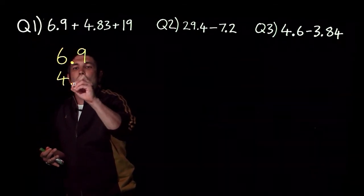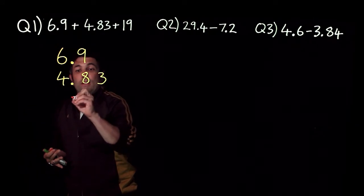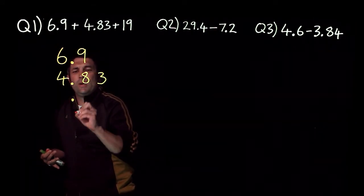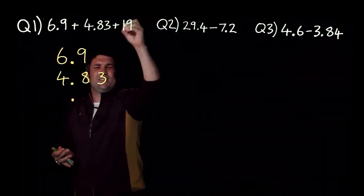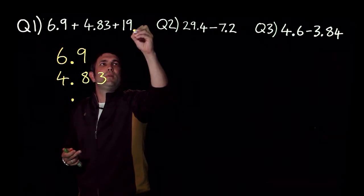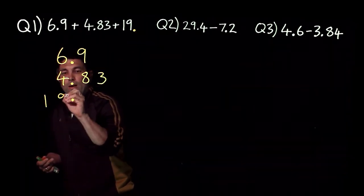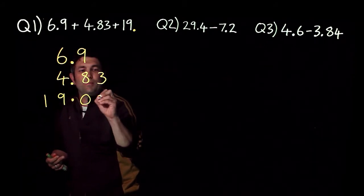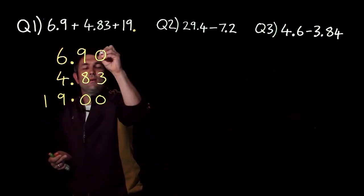So I'm writing all mine in a column like this. Now I'm gonna have a decimal point there but 19 has no decimal point. Now if it's a whole number the decimal point goes at the end so I'm gonna do that like that and I'm gonna fill up any gaps with 0 so I don't get confused.